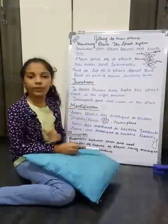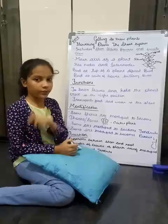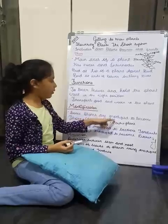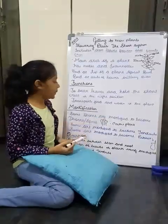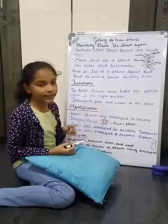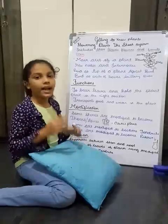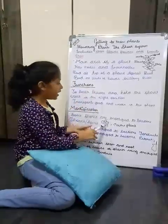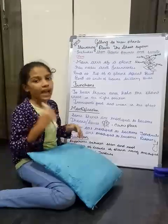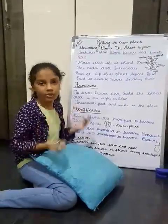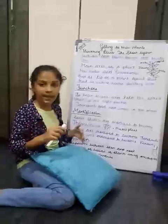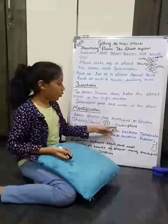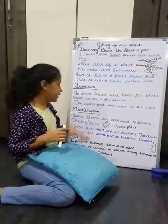Now we will see the modifications of stems, just as there were many modifications of roots. First, some stems are modified to become thorns or spines. An example is the cactus plant — it has no regular leaves, just a thick body with many spines. Because it grows in the desert and doesn't get enough rainfall, there is no water for photosynthesis, so this modification helps reduce transpiration.